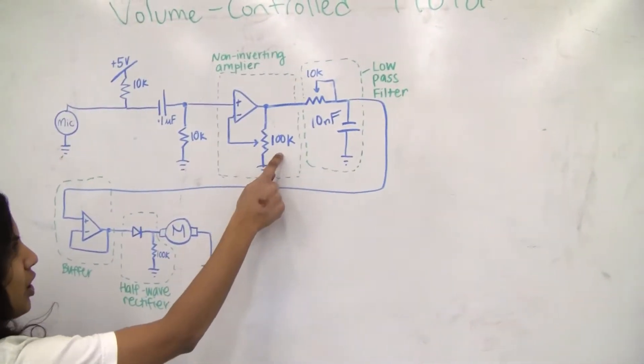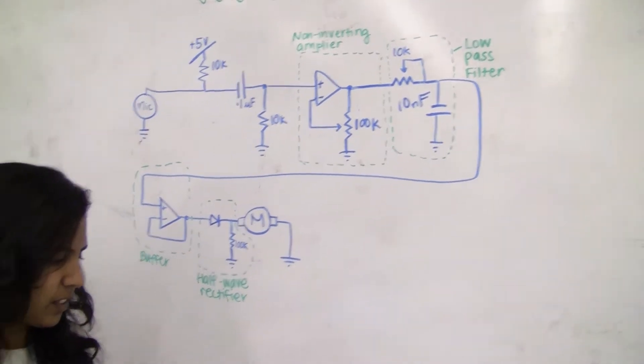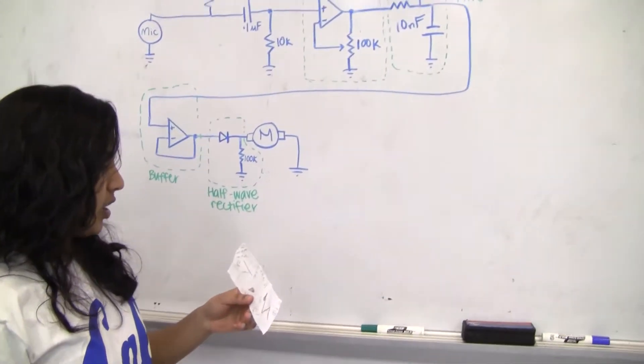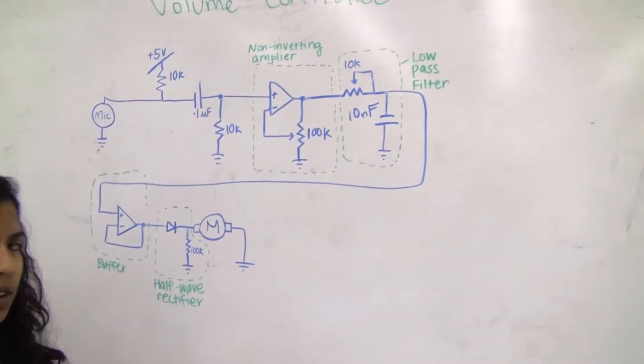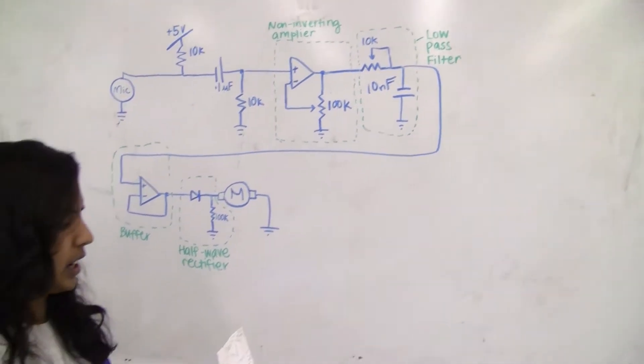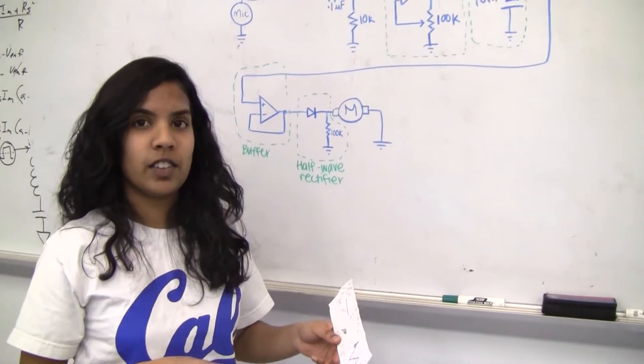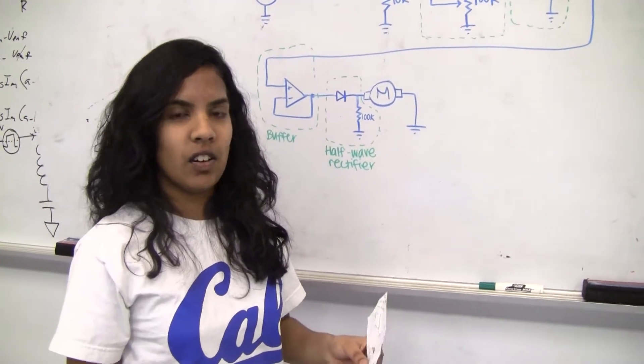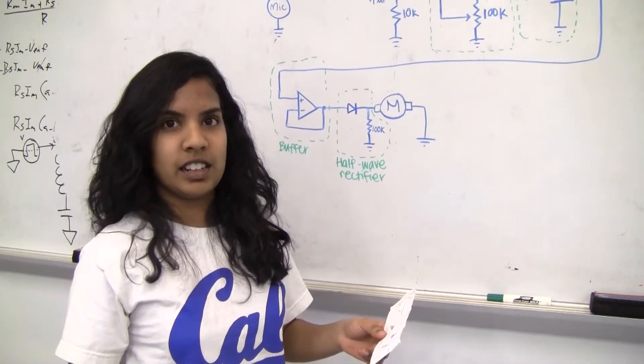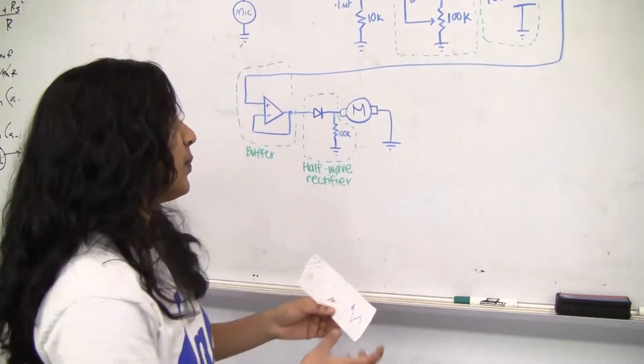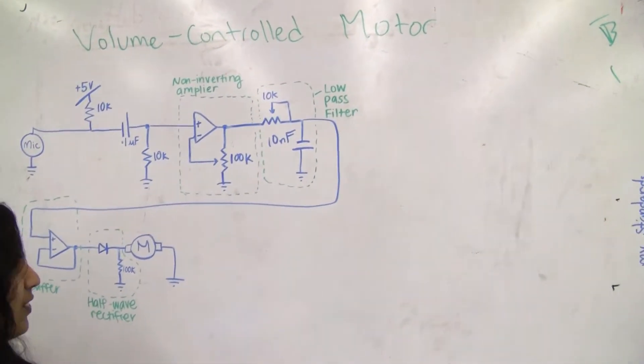We tuned this hundred K pot to have resistance values of 962 K for the second resistor and 8.5 K for the first resistor. That equals a gain of 113.2, so we had a very big gain so that we could have a good enough signal to go through our motor.